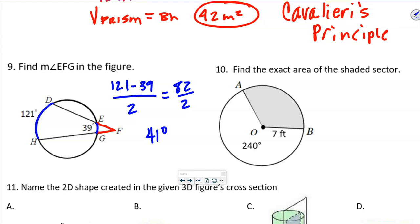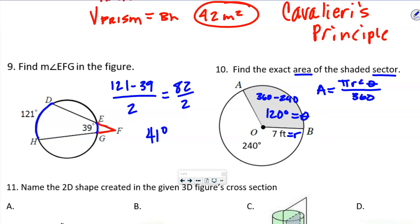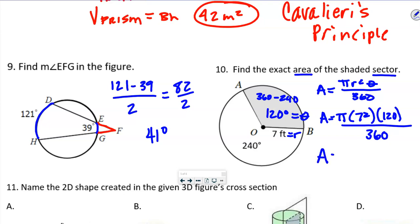Find the exact area of the shaded section. The unshaded section is 240 degrees, so the shaded section is 360 minus 240 = 120 degrees. That's our theta, and the radius is 7. The area of a sector formula is πr²θ/360. Substituting in: π times 7 squared times 120 divided by 360 — and since it says exact, we leave pi in the answer — giving us 49π/3 feet squared.